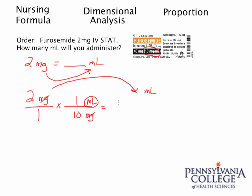We have 2 times 1 in the numerator, giving 2 milliliters, and 1 times 10 in the denominator, giving 10. Dividing gives 0.2 milliliters. Notice that 2 times 1 divided by 10 is the exact same multiplication and division steps used in the nursing formula — that is not by accident. The nursing formula is derived from dimensional analysis.